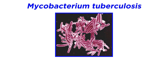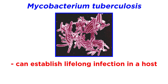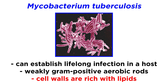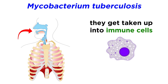So what causes it? TB is caused by Mycobacterium tuberculosis, a bacteria that is able to establish a lifelong infection in a host. These bacteria are weakly gram-positive aerobic rods. Their cell walls are rich with lipids, making them highly resistant to detergents, antibacterial antibiotics, and disinfectants. M. tuberculosis enters the respiratory airways and gets taken up into immune cells, where it is able to evade being killed by the immune system, continuing to replicate and spread.